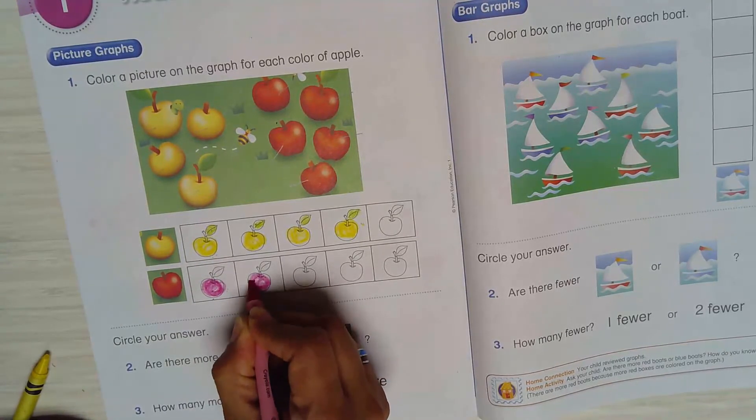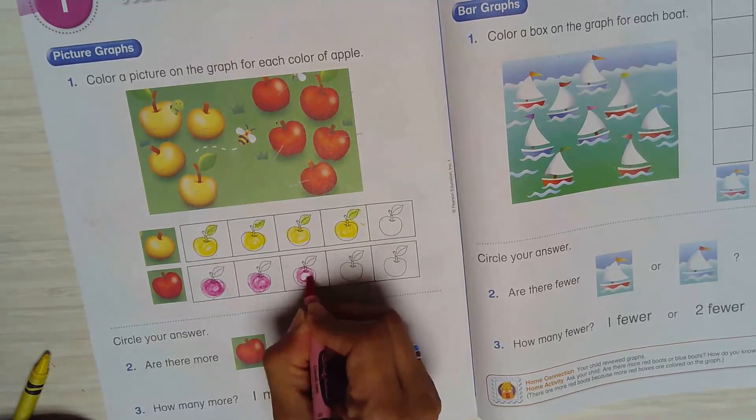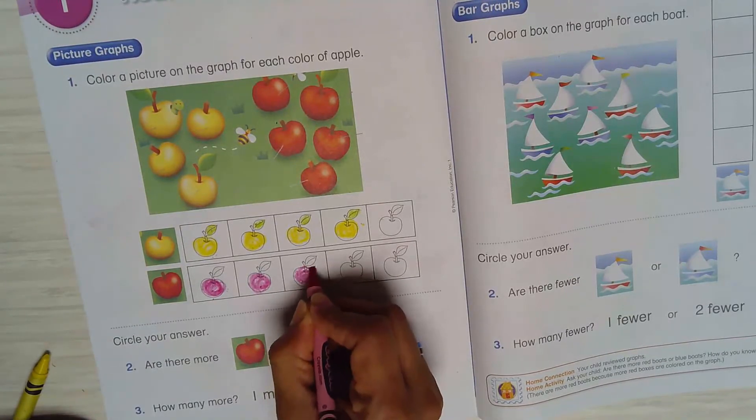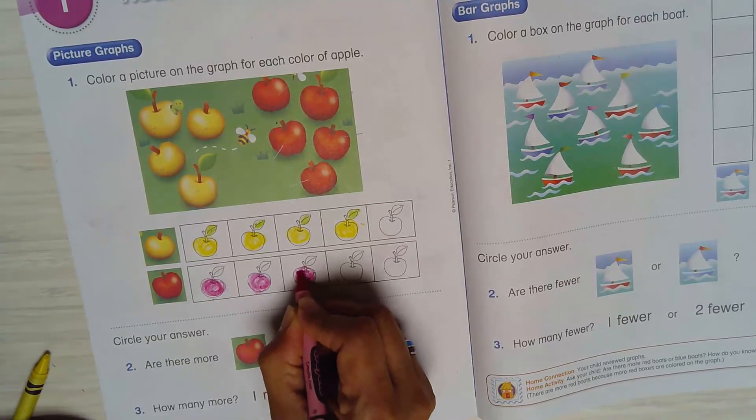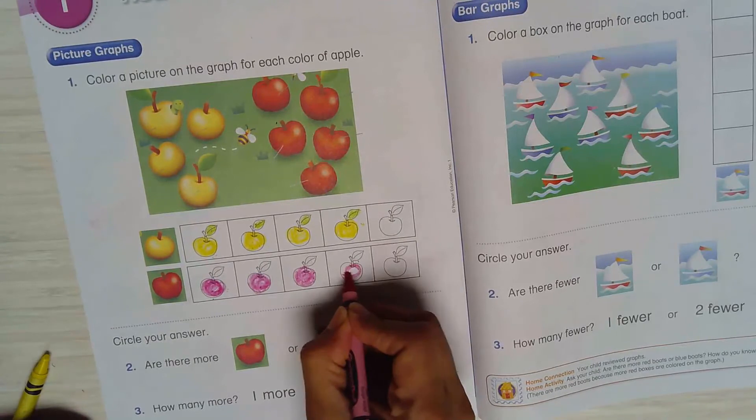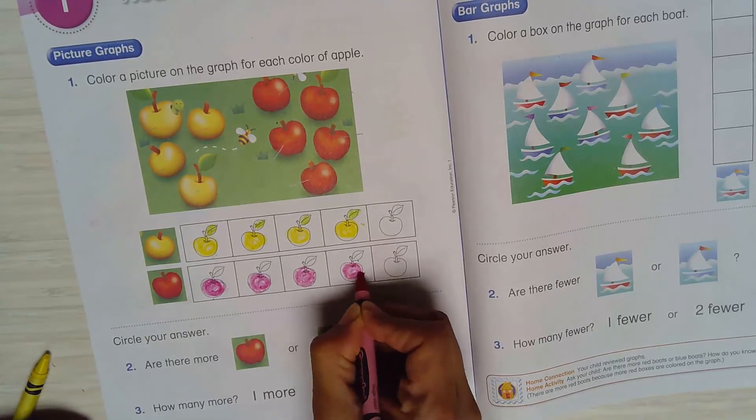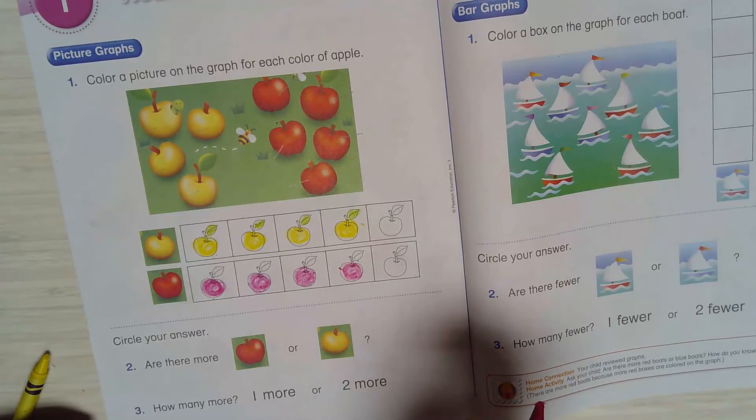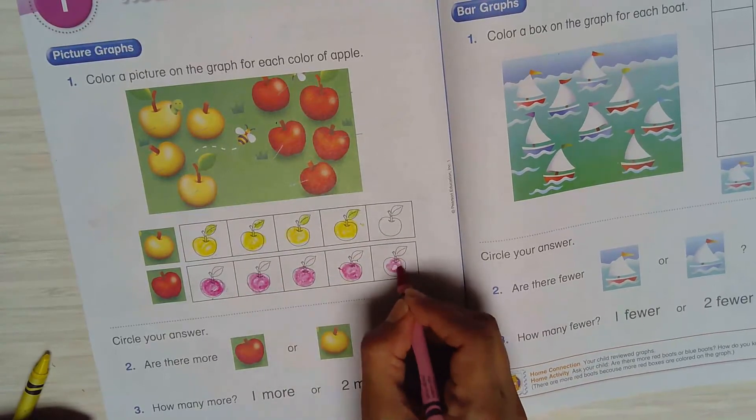So I know that I have five apples and I can color my apples. One, two, three - I know you would do better job than me - four, five. Five, awesome.